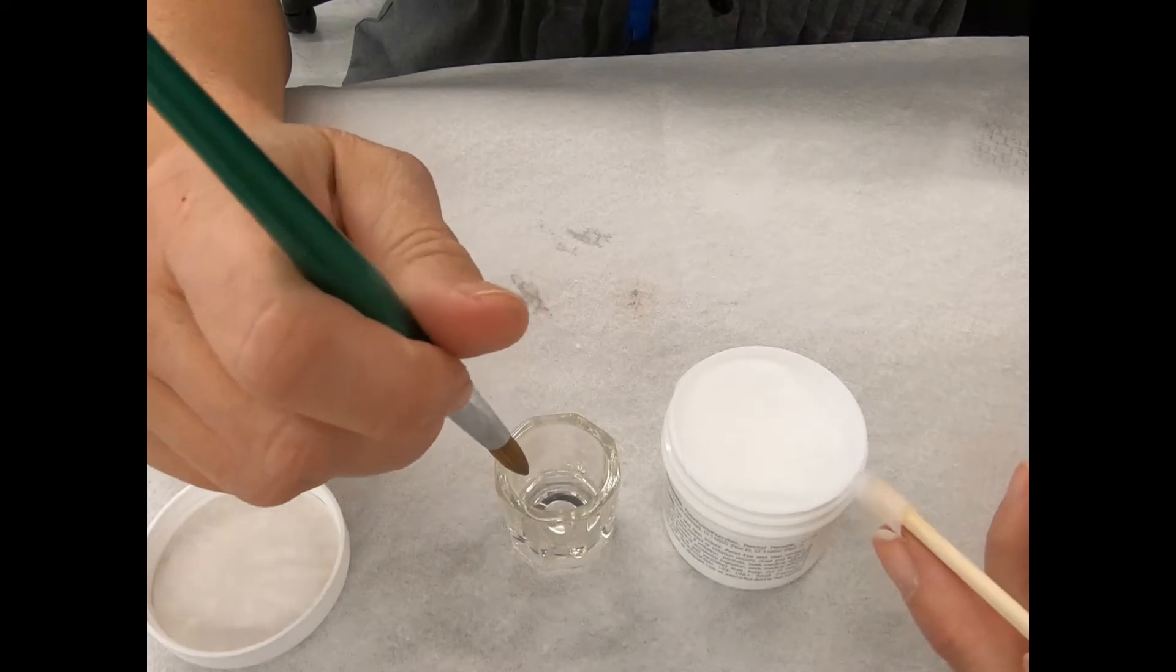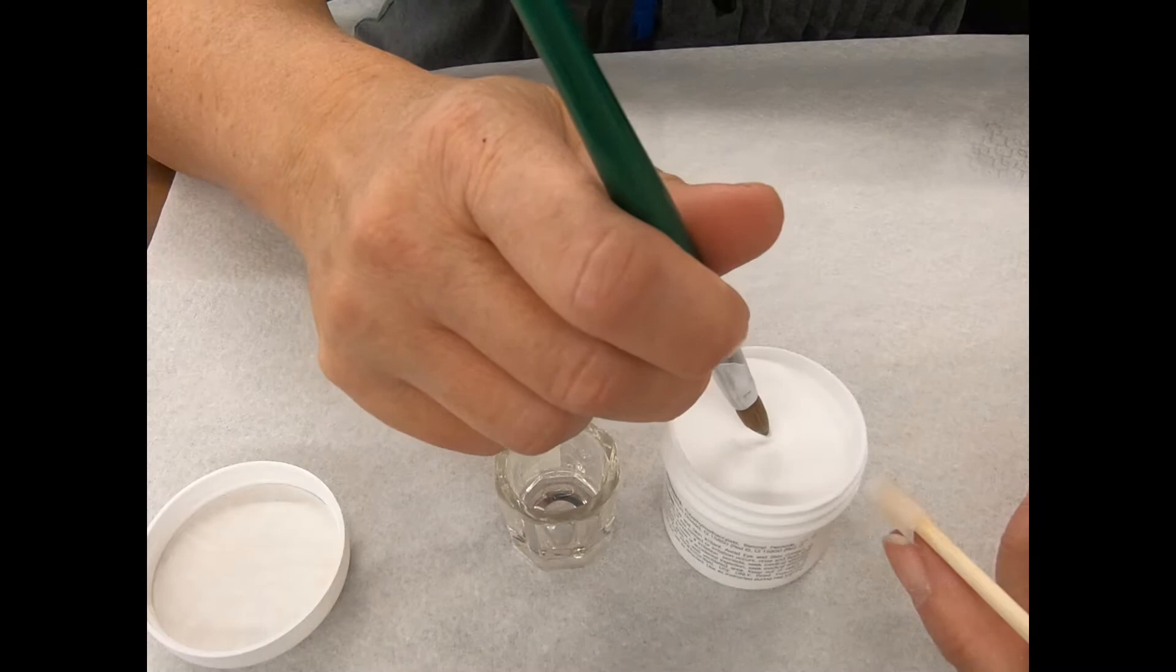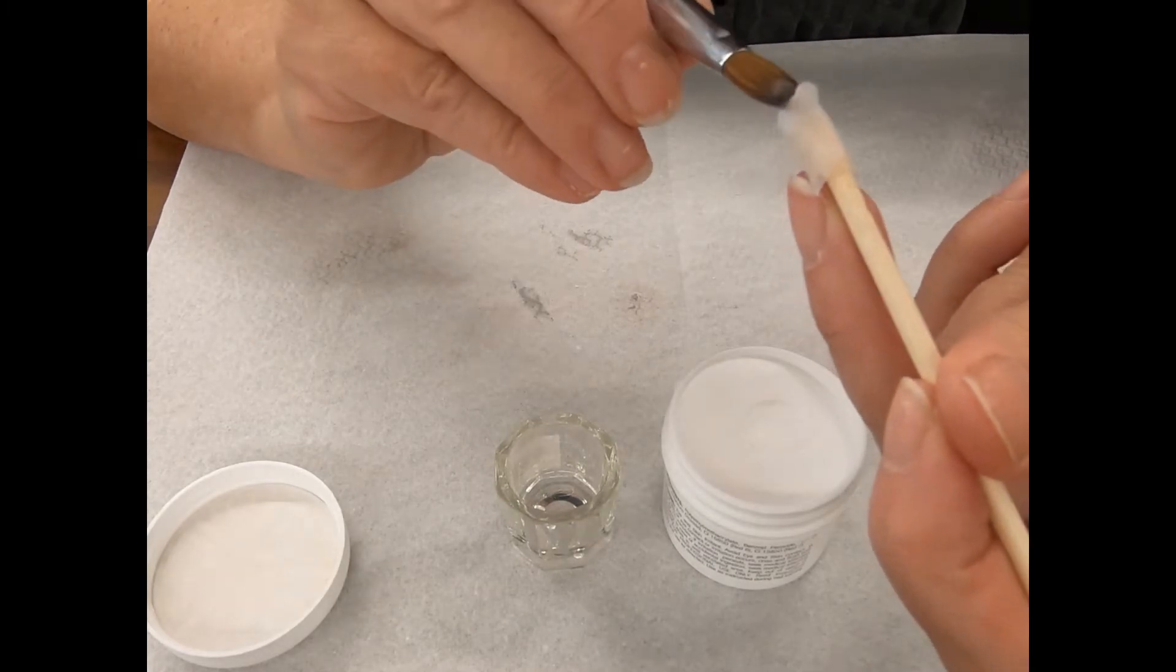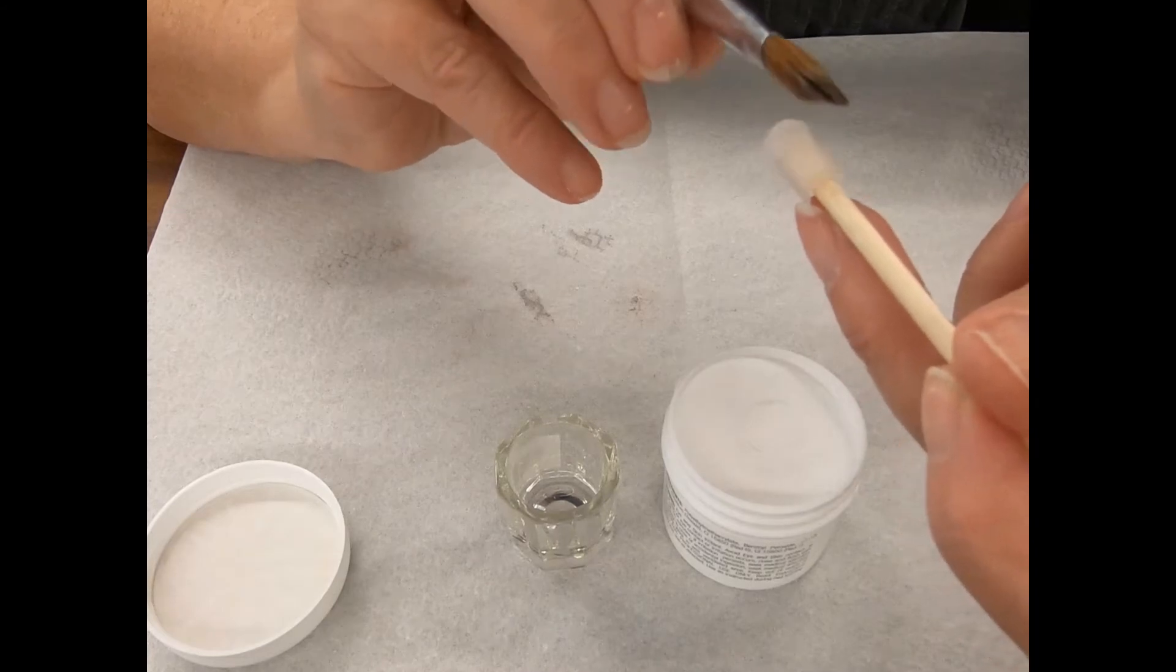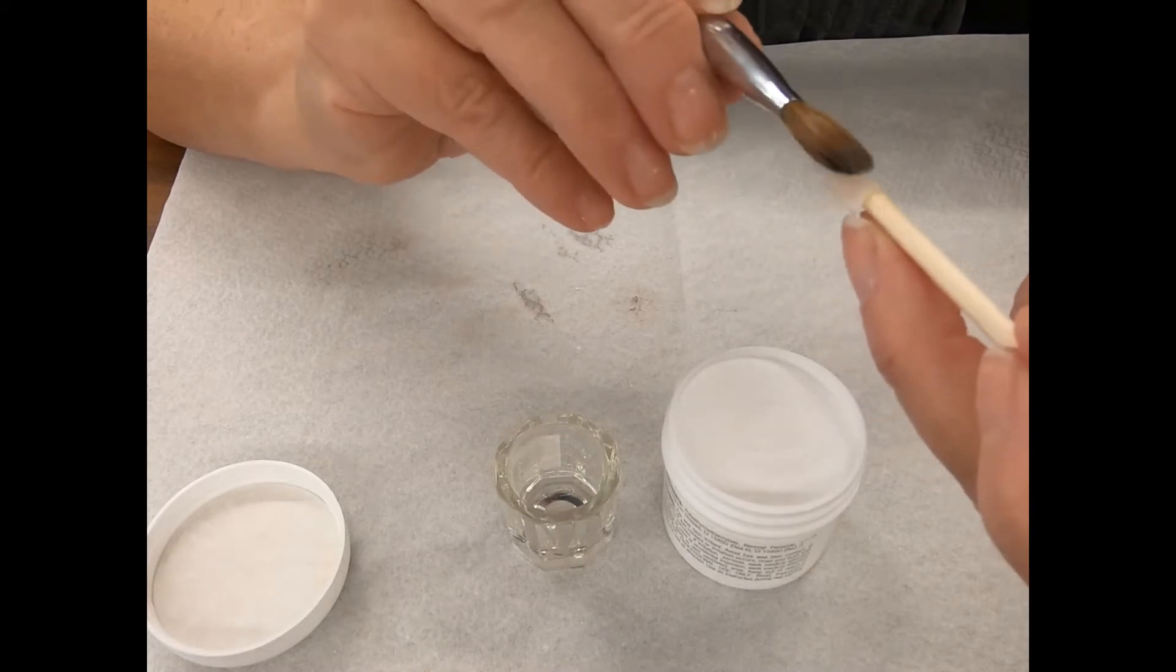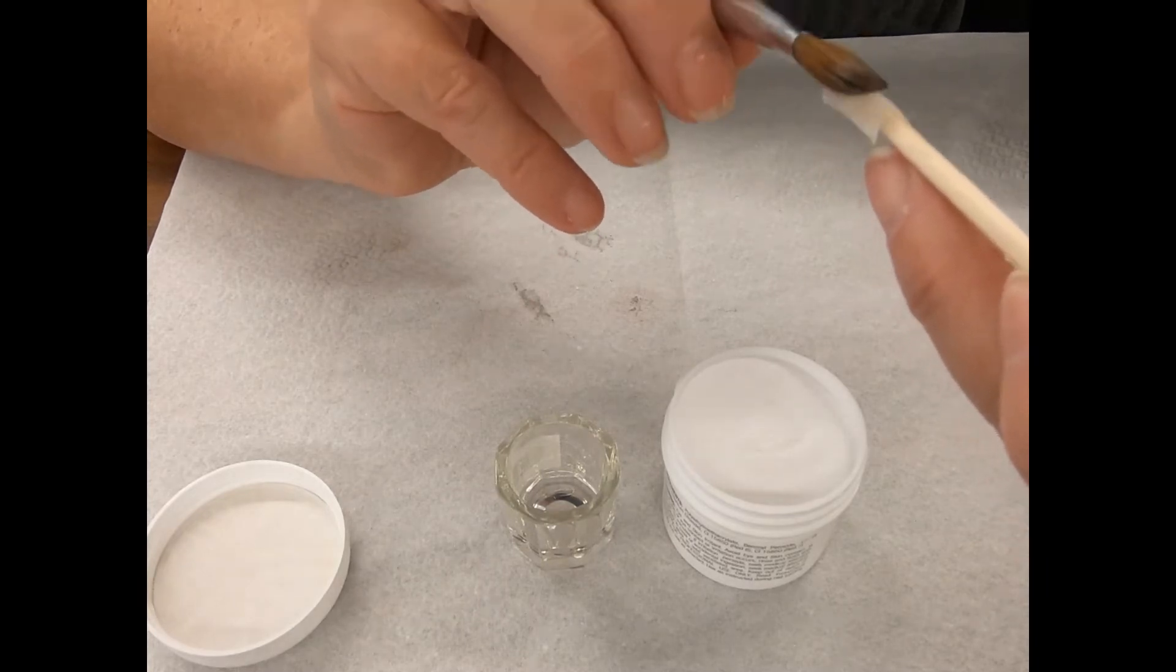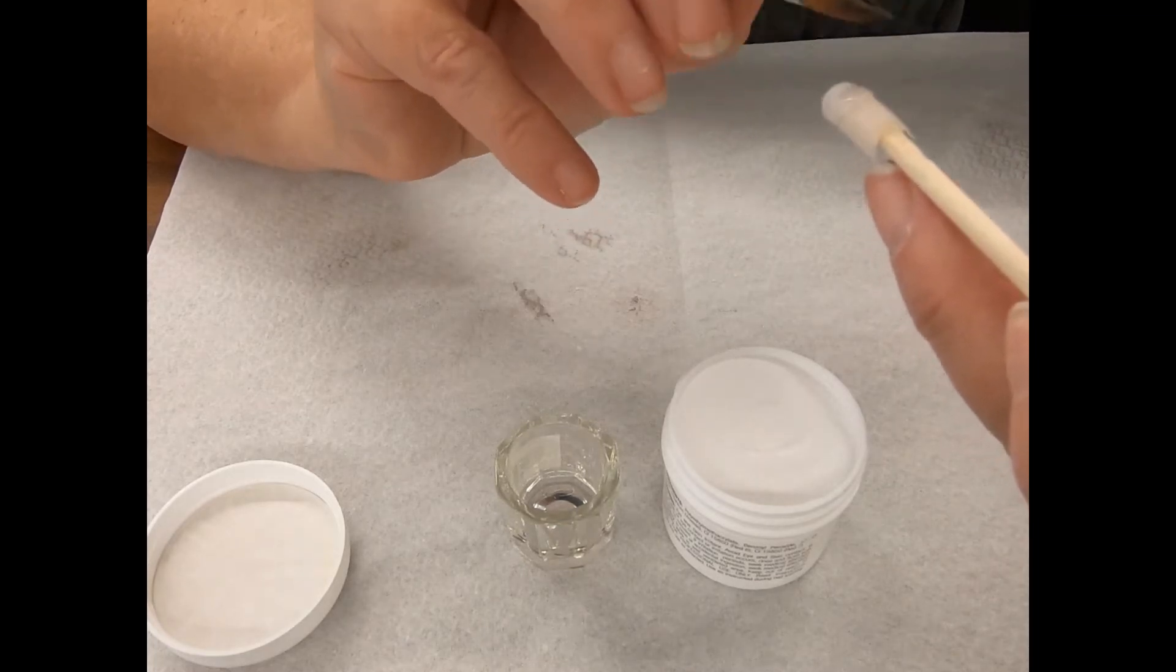So I'm going to pick up my acrylic, my monomer. I'm going to pick up my polymer, again just with the tip. I'm going to wait till it gets frosty. I'm going to roll it off, wipe my brush, and then I'm going to start building. So I'm making the client - the orange wood stick - tilt their hand up in the air so it's thinner to thicker.